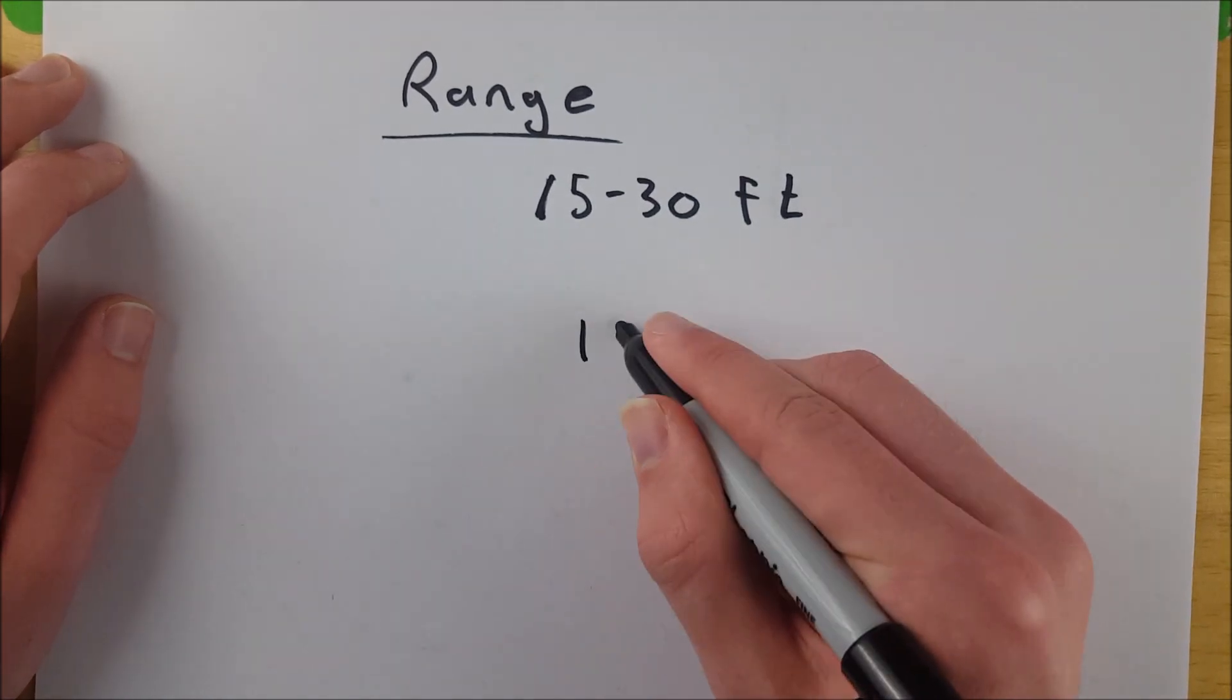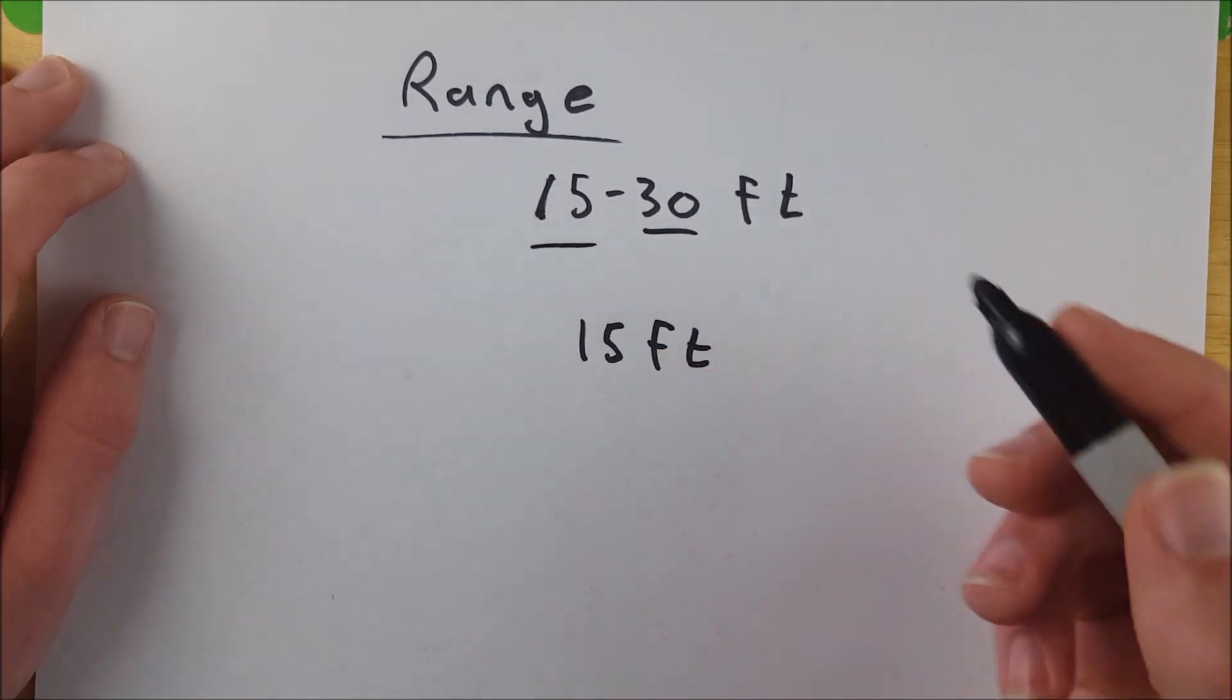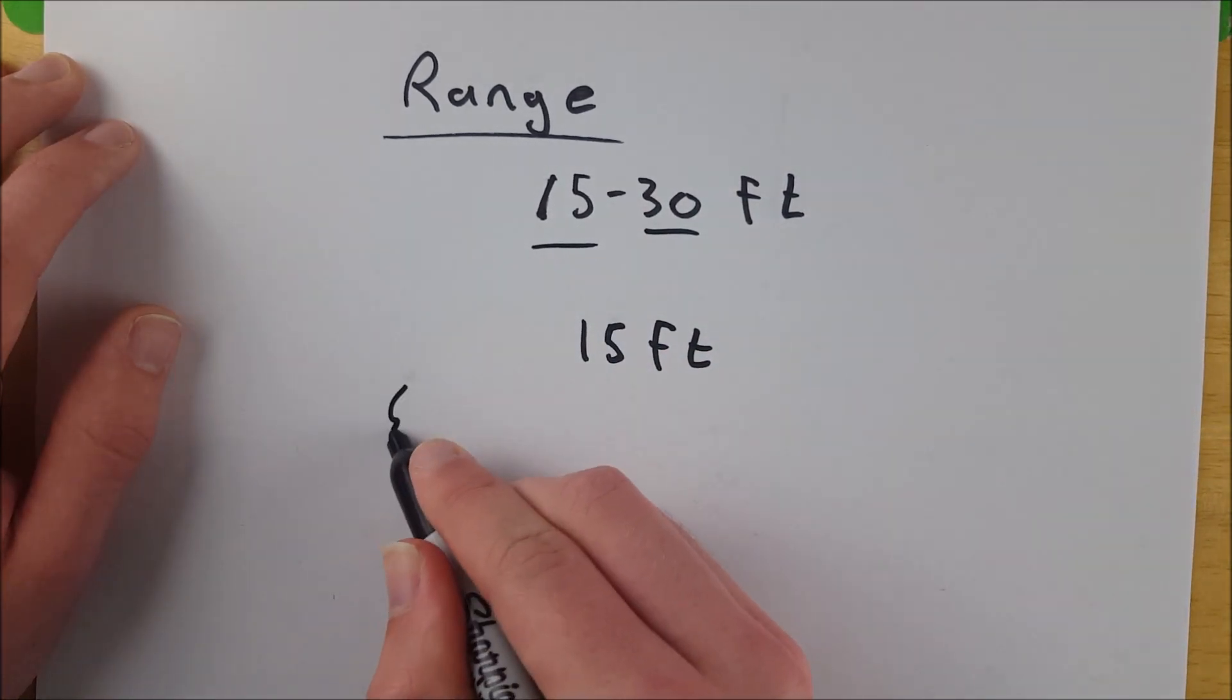So it has a range of 15 feet, which is just the maximum, 30, minus the minimum, 15. So if you have a set of data, let's say you've got some test scores, right?